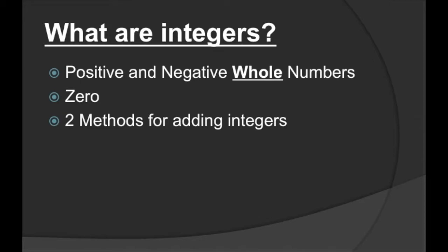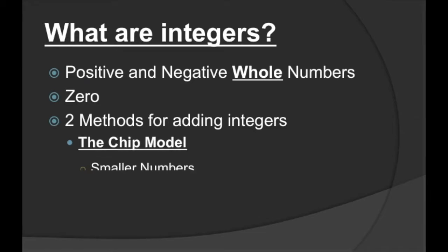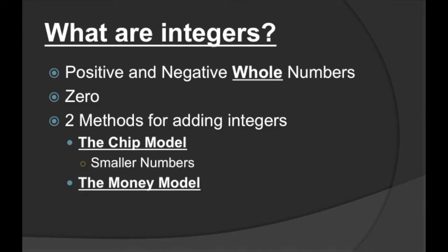Now there are two methods for adding integers — honestly there are more than two, but I feel the best ones to use are these following two. One of them is the chip model, and the chip model is great for smaller numbers. The other is the money model, and the money model is very good for bigger numbers.